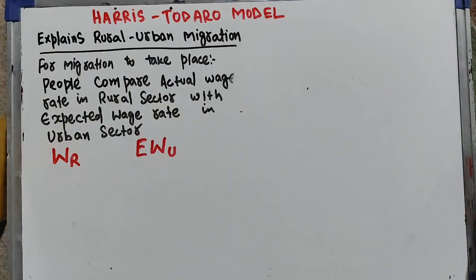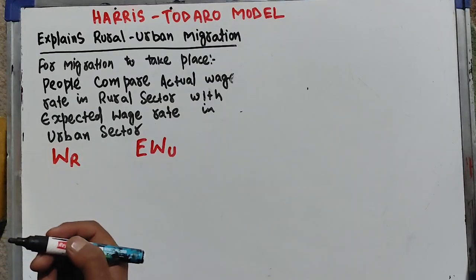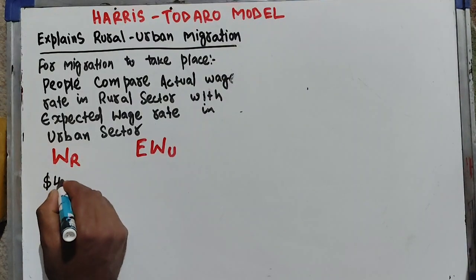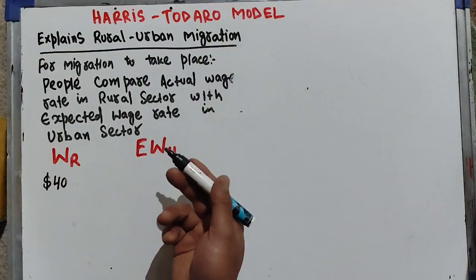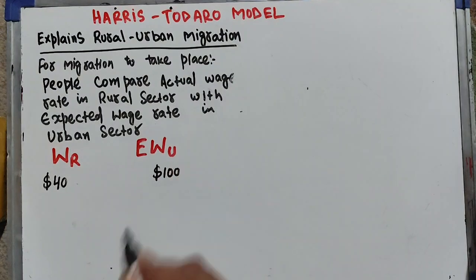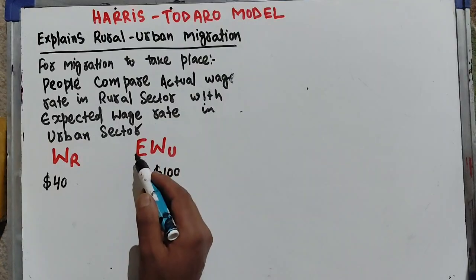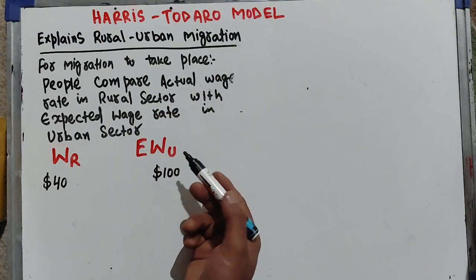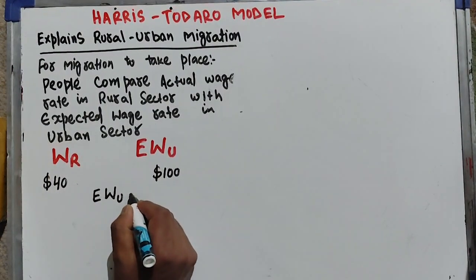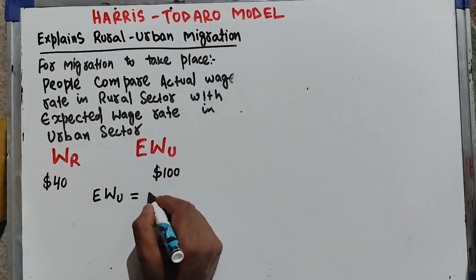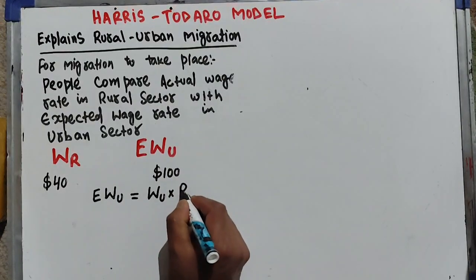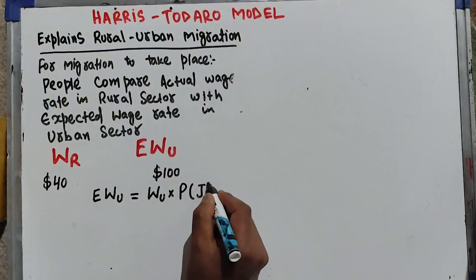For simplicity, let's assume the wage rate in the rural sector is $40 a day, and the wage rate in the urban sector is $100 a day. Now we need to find out the expected wage rate of the urban sector. The expected wage rate in the urban sector equals the actual wage rate in the urban sector times the probability of getting a job in the urban sector.